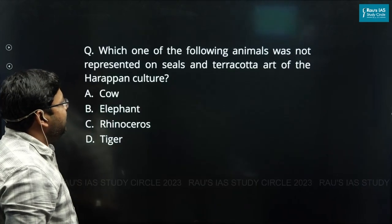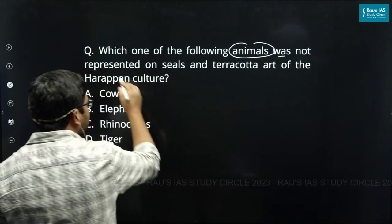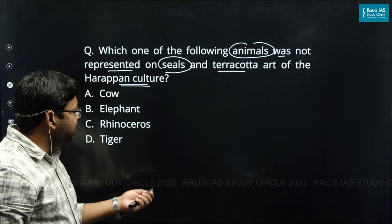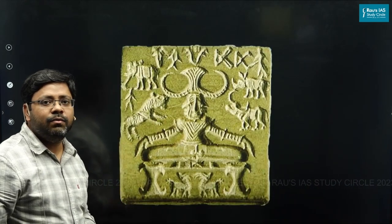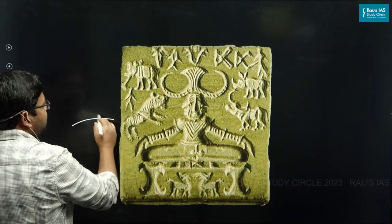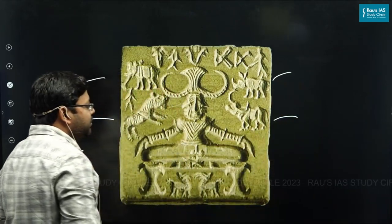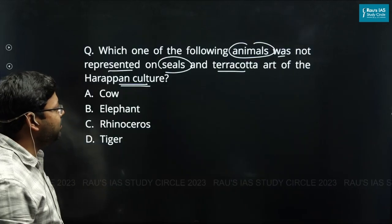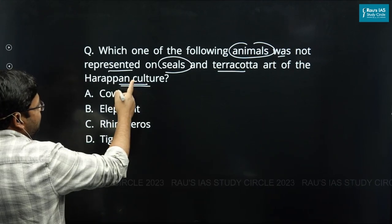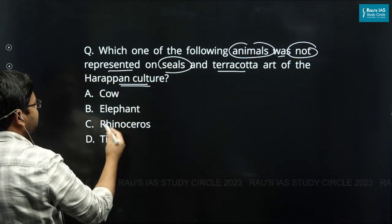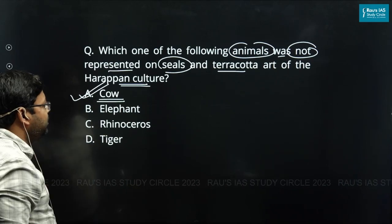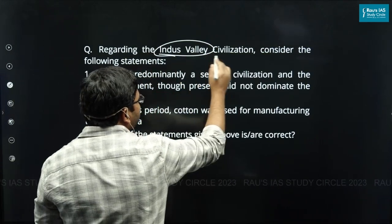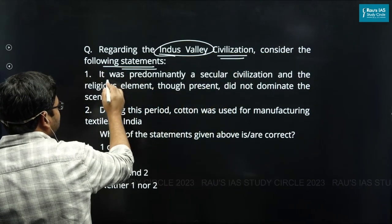The next question asks which animal was not represented on seals and terracotta of the Harappan culture. Looking at the famous Pashupati seal from IVC, you can see animals like tigers, elephant, bison, and rhino — but the cow is hardly represented. So the answer is cow, which was not represented on the seals of IVC.